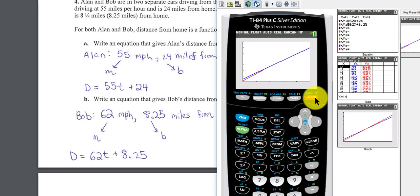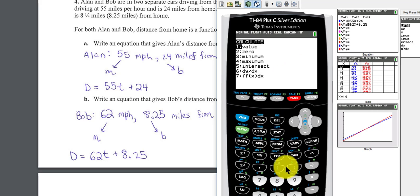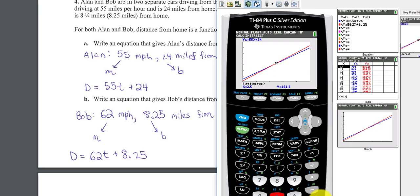First curve. Second curve. I press 2nd, trace, number 5 for intersection. Enter, Enter, Enter. And the intersection occurs at 2.25, 147.75. So what does this mean? They're going to ask you, what's the practical meaning of this point?